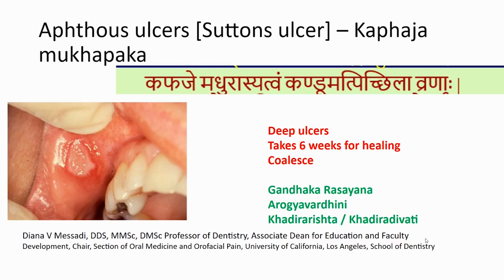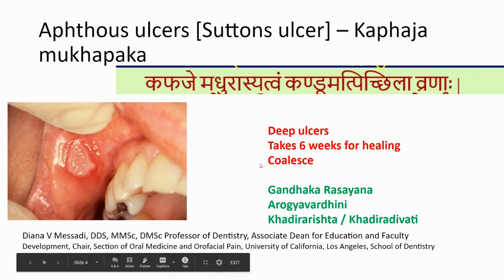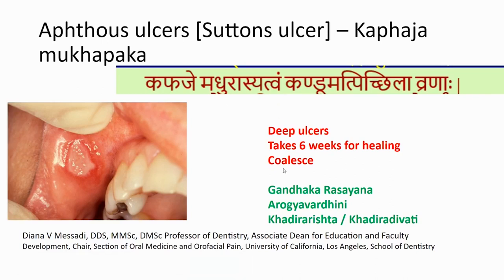Another variety of stomatitis is Sutton's ulcer, where the ulcers become deeper. The most common cause would be irritation due to some irritant food or irritant medicines. Patients who consume some of those irritant medicines tend to develop these kinds of ulcers. Characteristically they are deeper, and the surface would be half whitish in color, which is typical of the Kaphaja variety of Mukhavyoga. It takes longer time to heal and there is a tendency for multiple ulcers. If not treated, they may coalesce and become bigger.